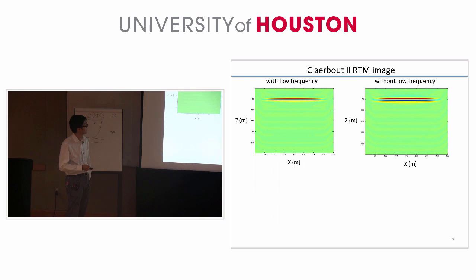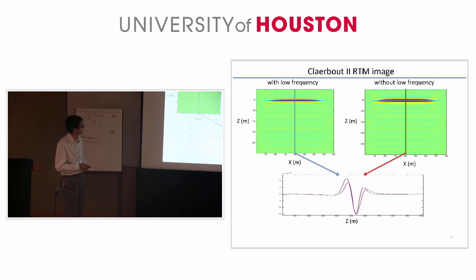Next I will show you the result for CLIBO2. The left figure shows the CLIBO2 image with low frequency, and it is broadband data. The right figure shows the CLIBO2 image without low frequency, which represents the conventional data image.